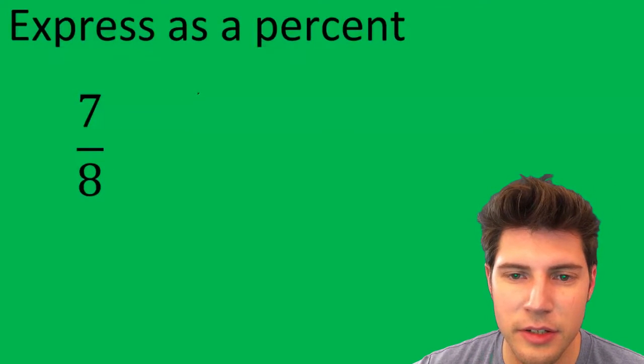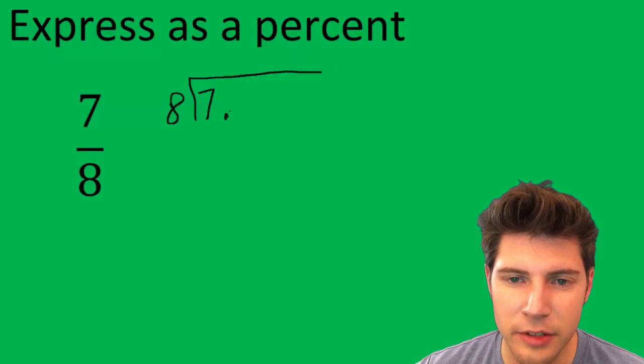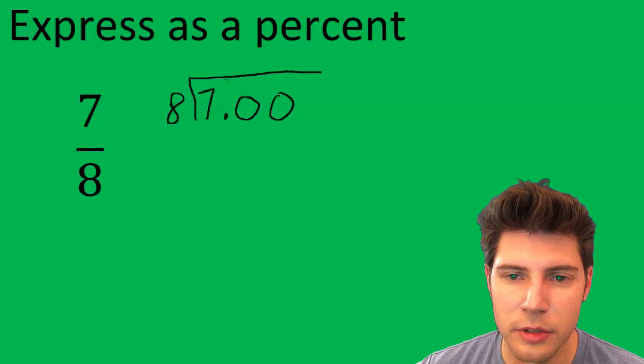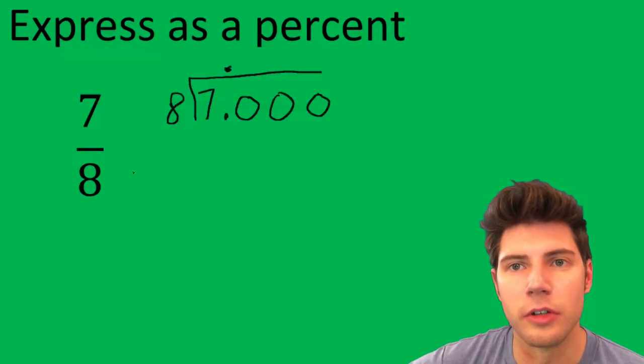So what we're going to do is 7 divided by 8. And then we're allowed to just do 7.000 and so on. And we'll bring the decimal up. So we just do the long division.